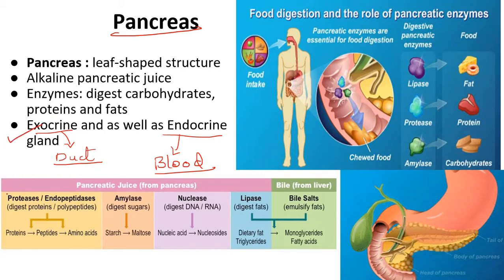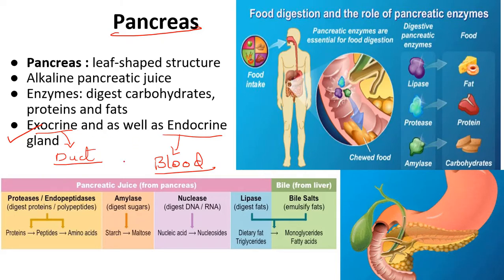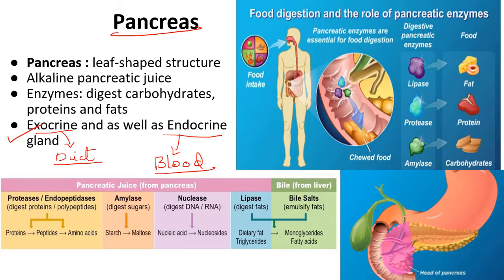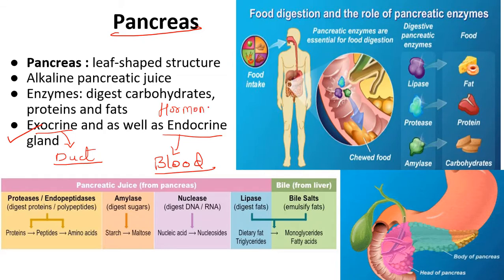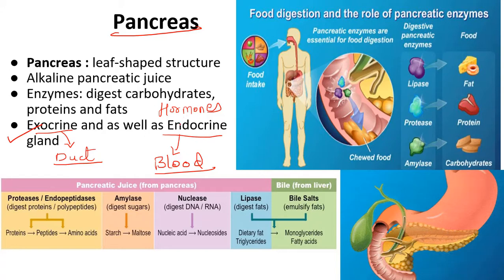For the function of digestion, the pancreas works as an exocrine gland because it has a pancreatic duct — a tube-like structure — which connects to the small intestine. Through that tube it secretes its juice into the small intestine. To control hormones in our body, it works as an endocrine gland, releasing hormones that control the amounts of chemicals in our body.